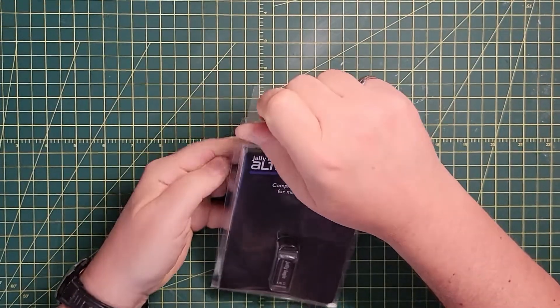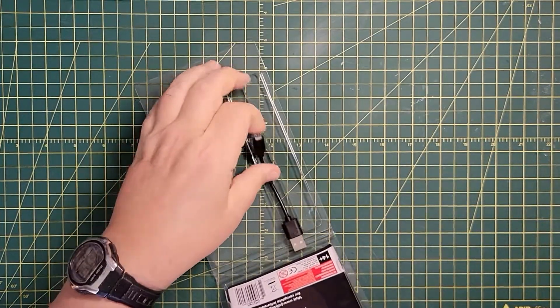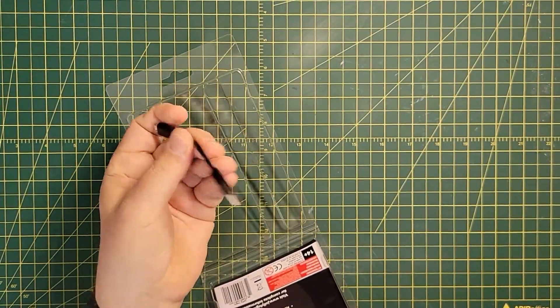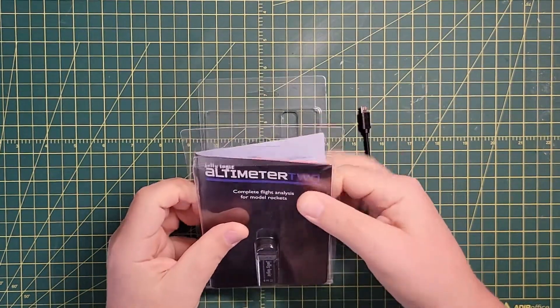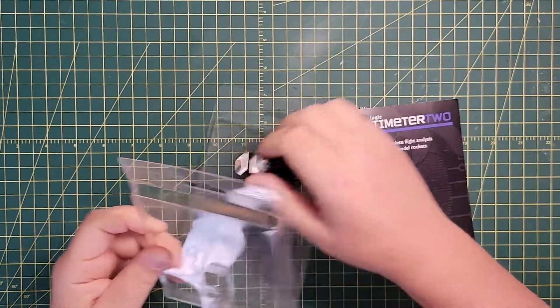So let's pop open the box here. It comes with a charging cable, it's like USB A to USB, manual, and of course the altimeter itself.